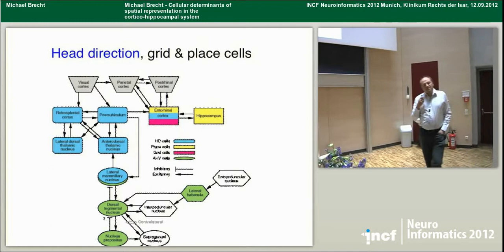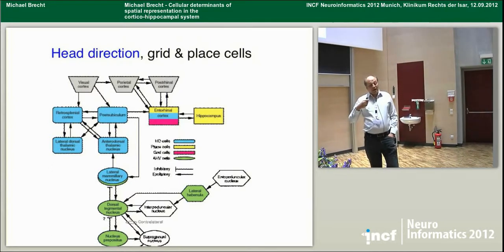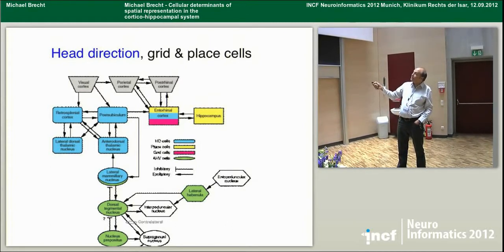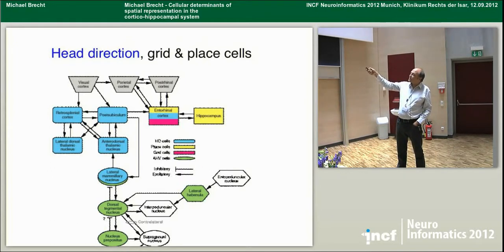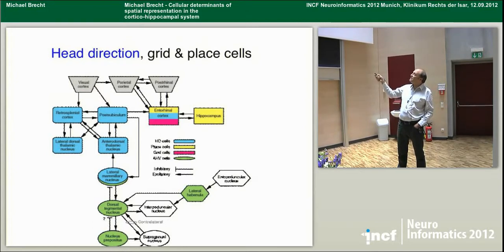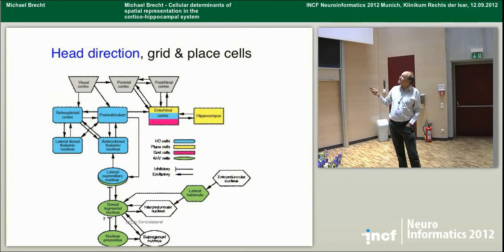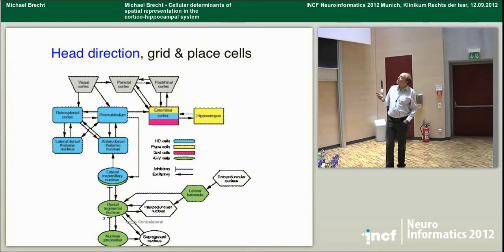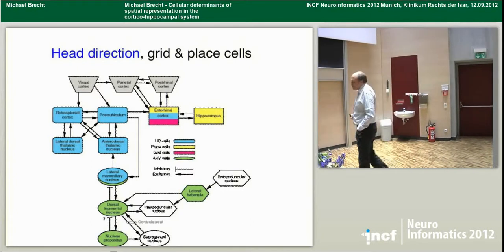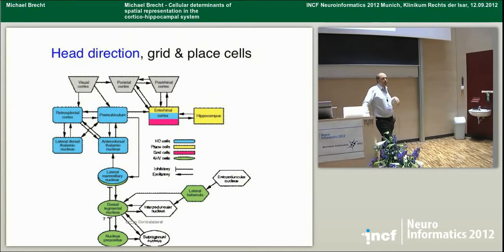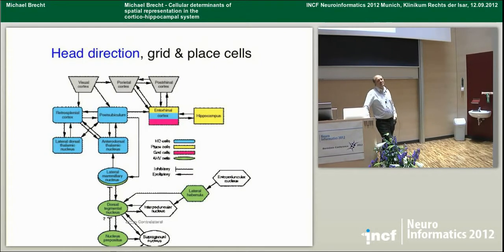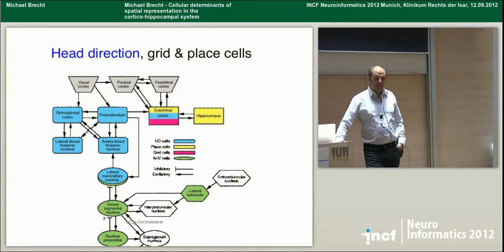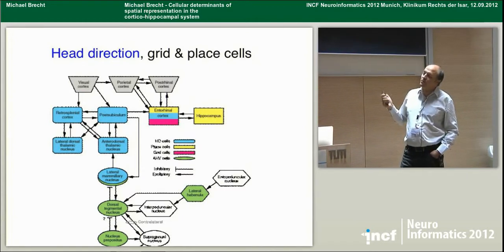The cellular activity in the cortico-hippocampal system is fascinating, rich, and explicit — it's very inspiring. A huge amount of work was done to understand how the system works. Here I have an anatomy diagram. Blue structures are where head direction cells were found; yellow, place cells; grid cells are here in pink, found in entorhinal cortex, and also in the post-subiculum and parasubiculum. There was a lot of anatomical work triggered, and many hundreds of models were generated to explain how the animal makes place cells and these spatial representations.